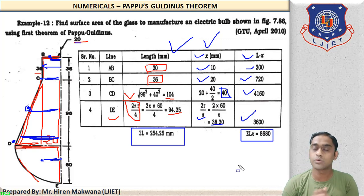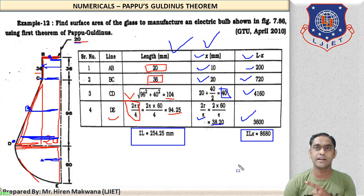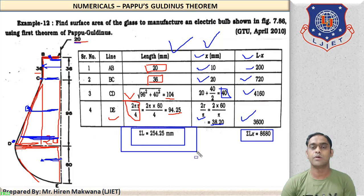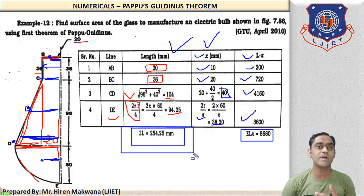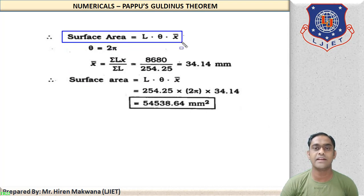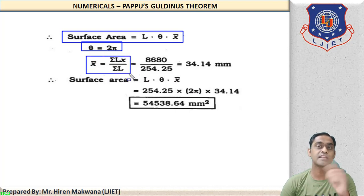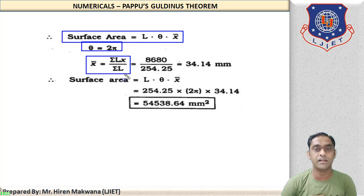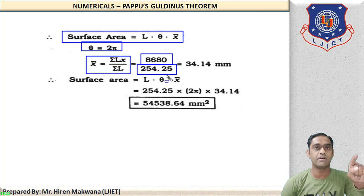Now we calculate surface area. The formula is: Area = θ × L × X̄, where θ = 2π. X̄ = ΣLX / ΣL. ΣLX is the sum L₁X₁ + L₂X₂ + L₃X₃ + L₄X₄, divided by total length ΣL = L₁ + L₂ + L₃ + L₄. This gives X̄ = 34.14 mm.